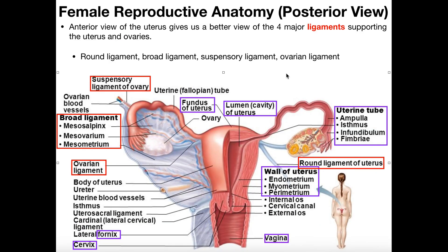Now let's take a look at some of the pieces of the uterus. The inside is going to be a space — that's where the baby is eventually going to be developing — called the lumen of the uterus. The top part, the most superior aspect, is going to be the fundus region. Pretty much all of this large area in the center is going to be the body of the uterus, and of course down here is the cervix.